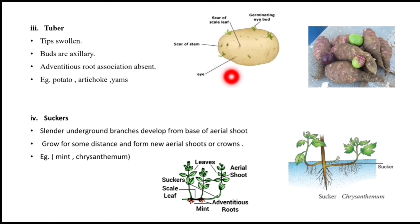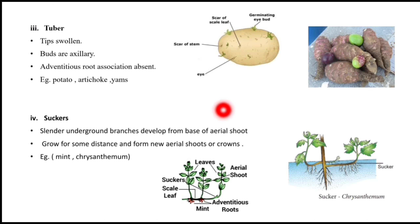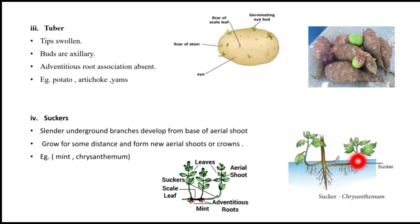Examples of tubers are potato, artichoke, or yams. Next is suckers. Suckers are slender underground branches. They develop from aerial shoots and grow from the base, then form new aerial shoots. Examples are chrysanthemum and mint.